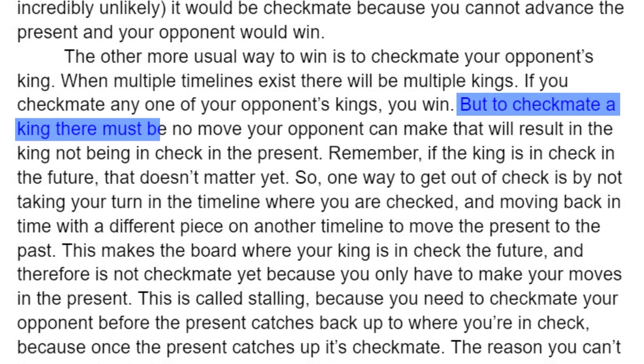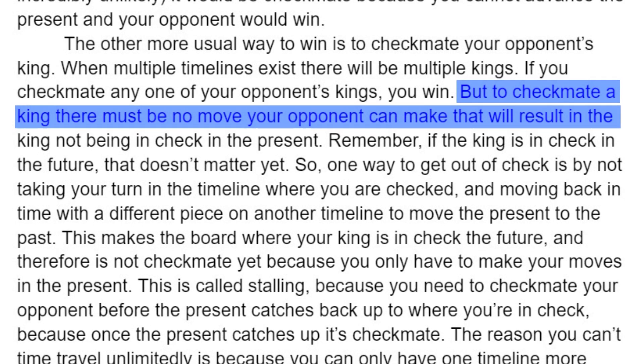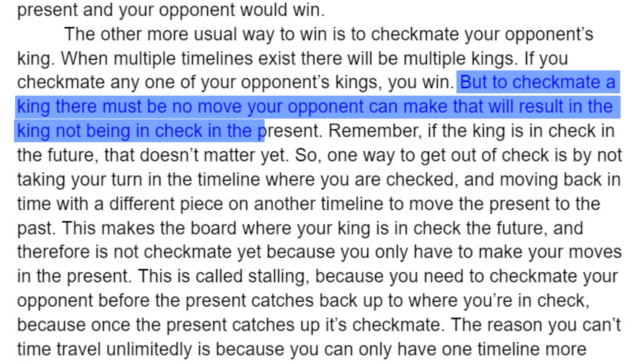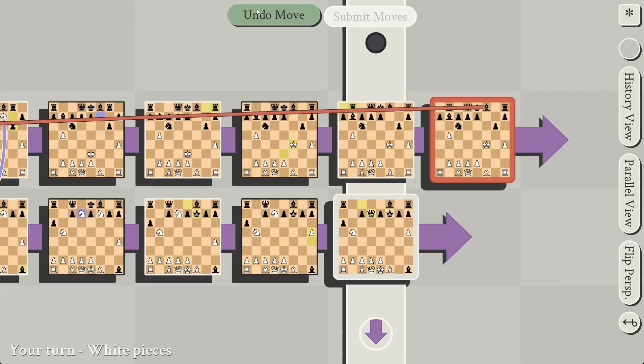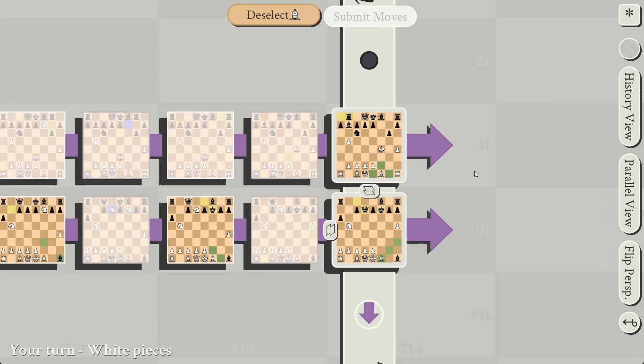But to checkmate a king, there has to be no move your opponent can make that will result in the king not being in check in the present. Remember, if the king is in check in the future, that doesn't matter yet.